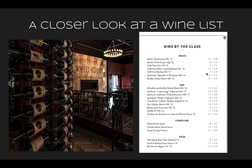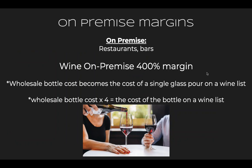So let's talk about on-premise margins. On premise — restaurants and bars — the on-premise margin is 400%. They mark up the cost they paid by 400%. This means the wholesale bottle cost becomes the cost of a single glass pour on a wine list, and the wholesale bottle cost times four equals the cost of the bottle on a wine list.